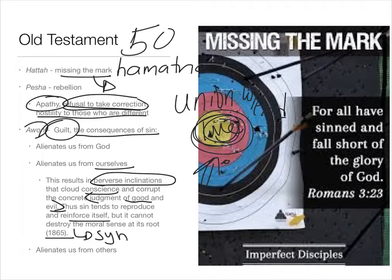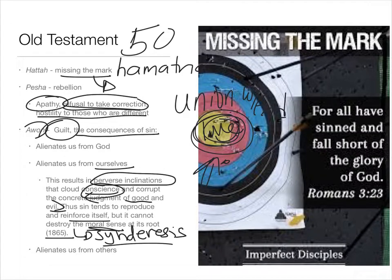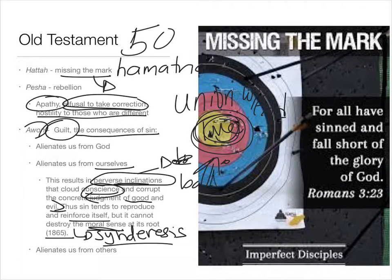We learned about the difference between synderesis and conscience. The more we sin, the more natural it seems and the more natural it feels, and that leads to a cycle of sin that clouds the conscience. But deep down inside, we have that moral sense — synderesis — to do good and avoid evil, and that can never be blotted out. This is the reason why venial sins can be dangerous: they start to order you toward what's bad, not what's good, and they cloud our judgment. That's why we want to even avoid things that seem simple, like venial sins.